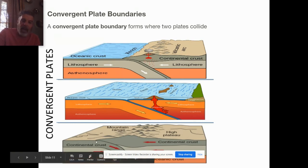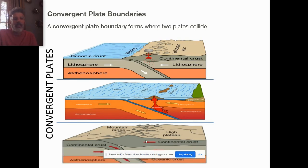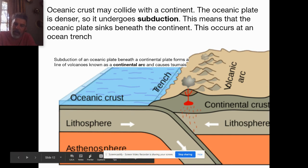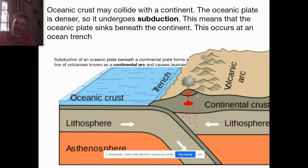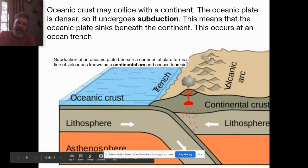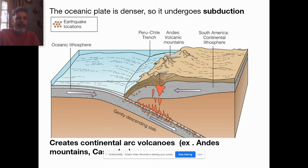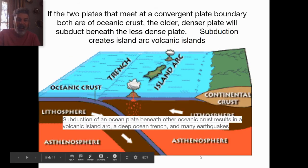When two continents converge — continental plates — you end up with the largest mountains on Earth. When oceanic crust collides with continental crust, the oceanic crust subducts and there's a trench along the continental margin. You end up with a volcanic arc parallel to the trench, because the oceanic lithosphere melts and forms volcanoes. Also, when they do move — since they're often stuck — you can end up with tsunamis. The oceanic plate goes under because oceanic plates are more dense and therefore subduct under the less dense, thicker continental plate.